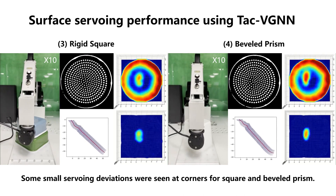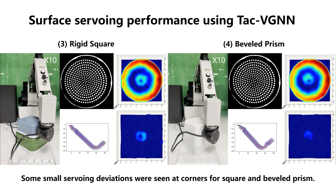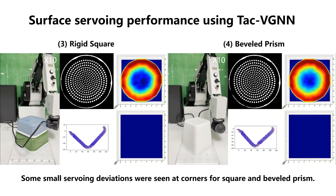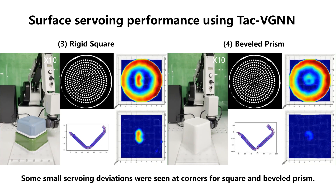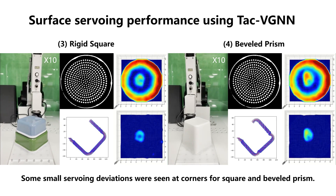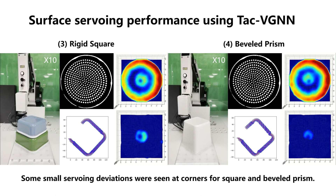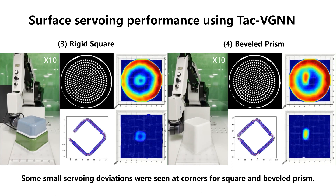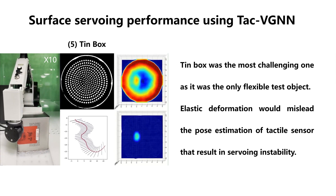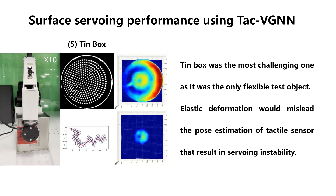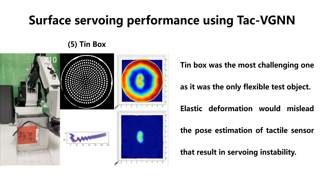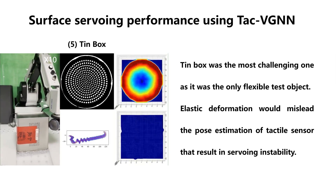Only several deviations were seen at the corners, which were caused by the PI controller. The tin box was the most challenging object due to its flexible surface — the elastic deformation would mislead the pose estimation of the tactile sensor, shearing and overlapping the pins on the skin, which resulted in servoing instability.